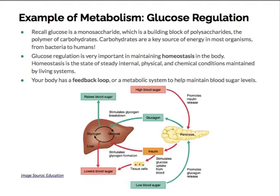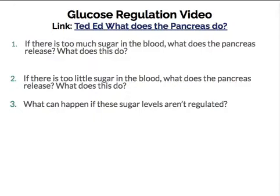Here is a simple diagram of a feedback loop. You're going to watch a video that explains this in more detail, but the two signals or pathways to follow are low blood sugar shown in green and high blood sugar shown in red. The stimulus of the sugar signals a metabolic response in the body, and this response happens in order to maintain homeostasis. Pause here, go to Blend, watch the video, answer the three questions, and then come back when you're finished.